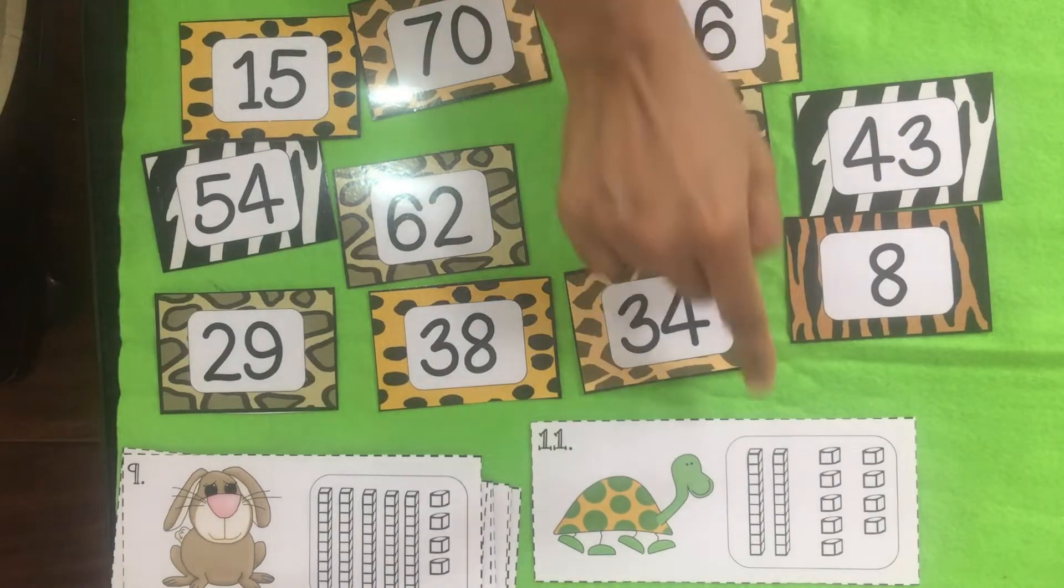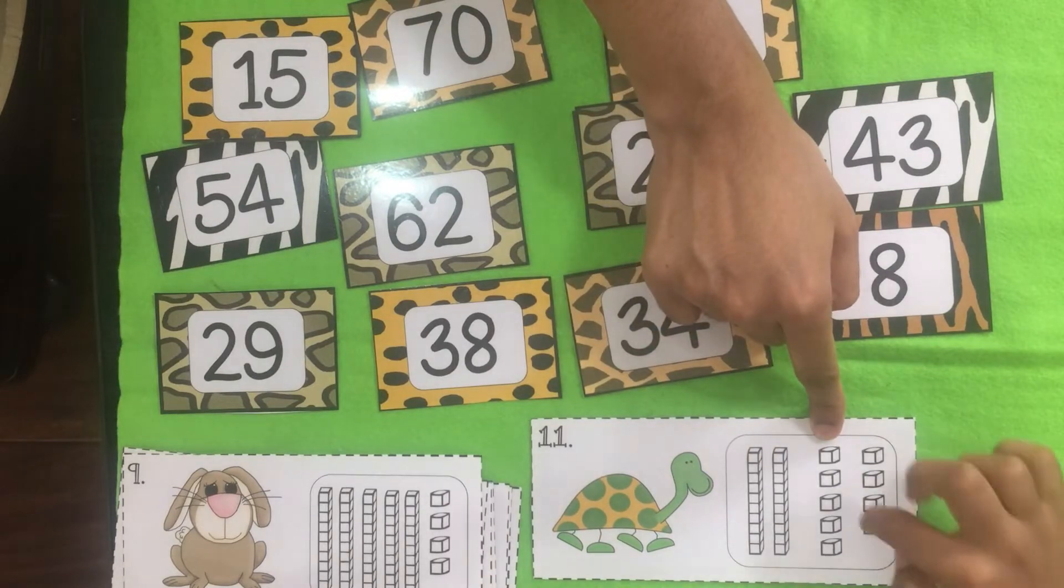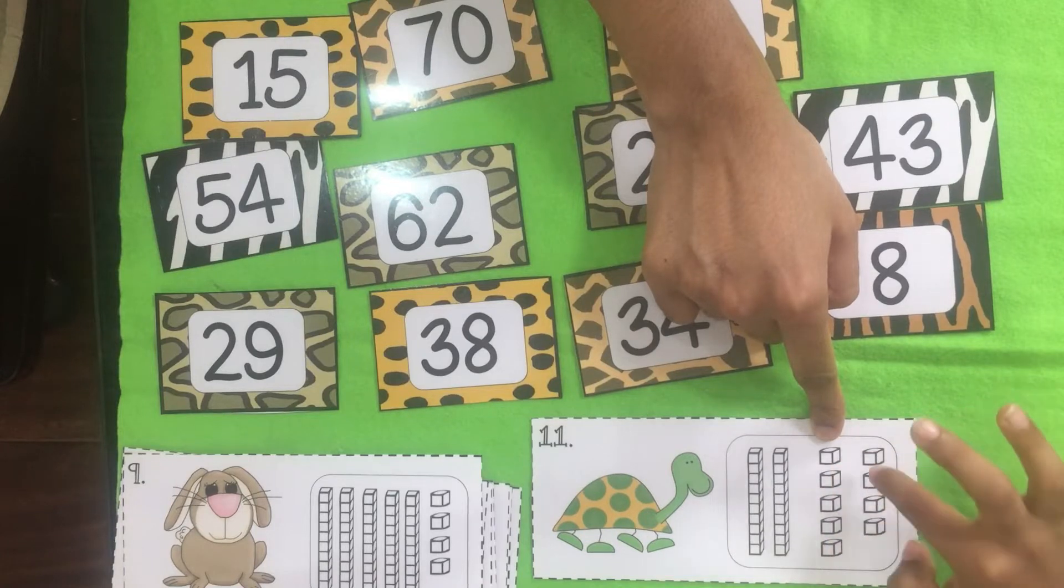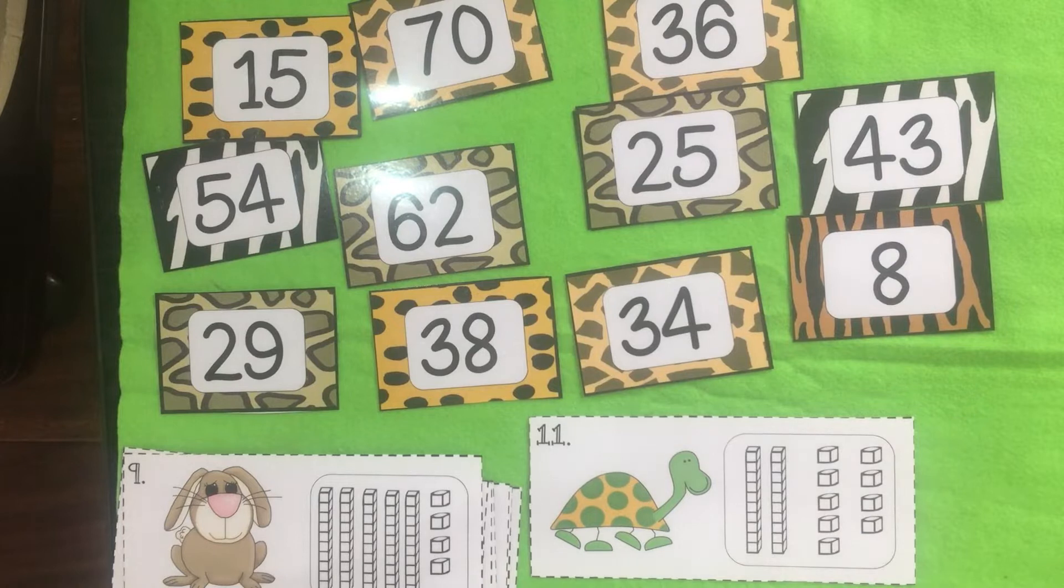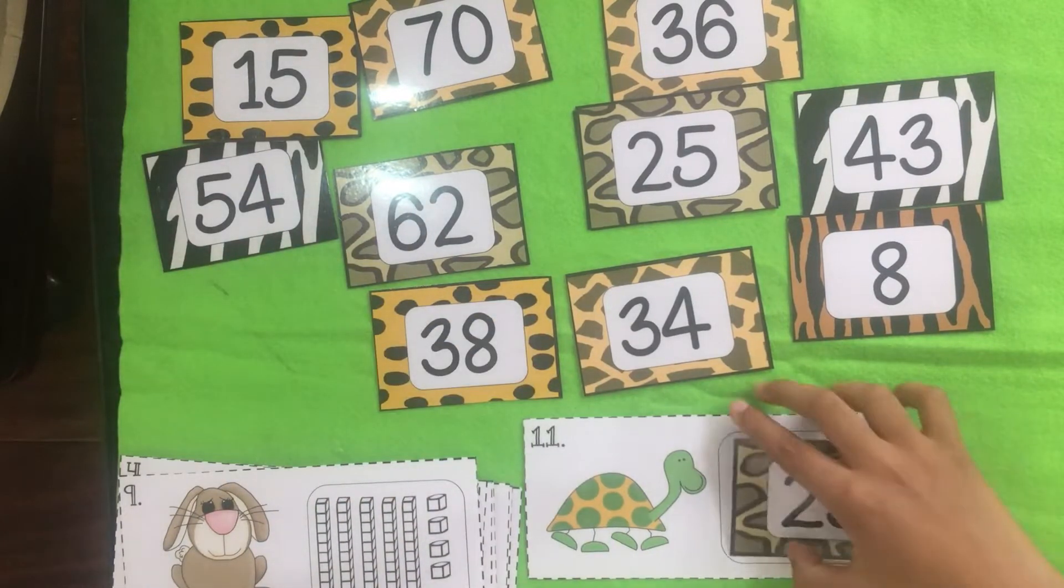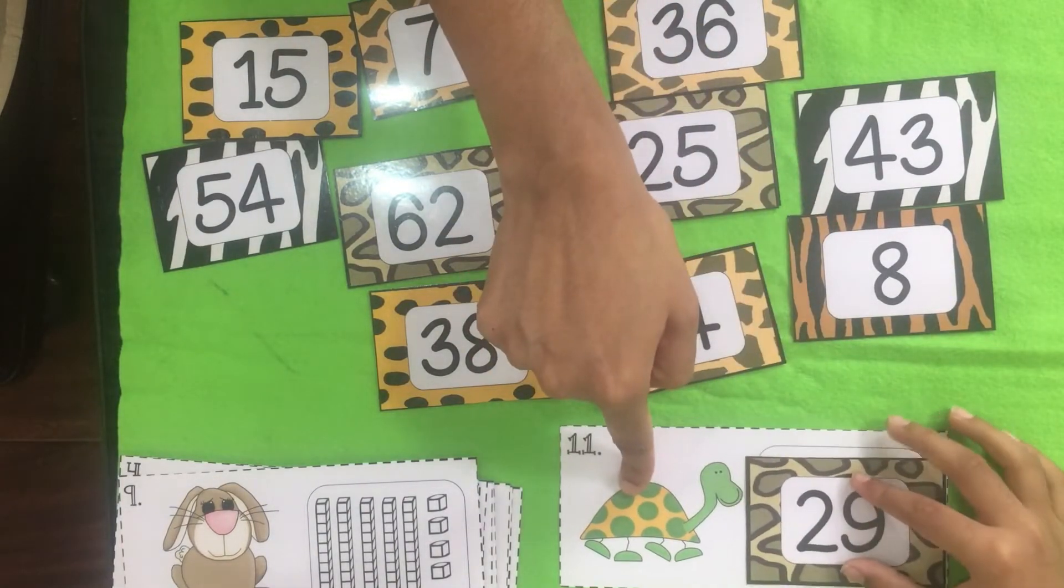Two tens. One ten. Two tens. Two tens and one unit, two unit, three unit, four unit, five unit, six unit, seven unit, eight unit, nine unit. So I get to pick twenty nine. So it is two tens and nine units which is twenty nine.